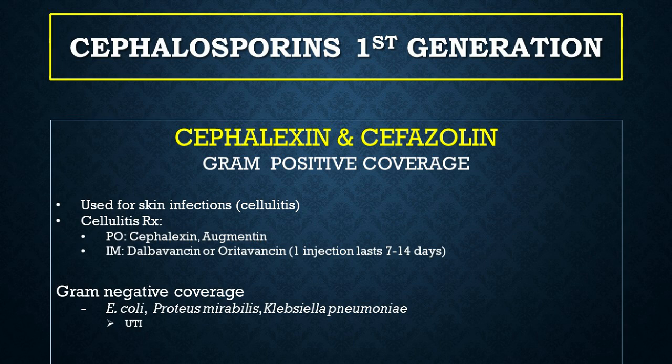Here you can see the first generation cephalosporins. The most commonly used ones are cephalexin and cefazolin. They are active against most gram-positive cocci, except for enterococci, oxacillin-resistant staphylococci, and penicillin-resistant pneumococci. They are very commonly used to treat skin infections, especially cellulitis. They are also active against most strains of E. coli, Proteus mirabilis, and Klebsiella pneumoniae. For gram-negative coverage, cephalexin and cefazolin are most commonly used for UTI.